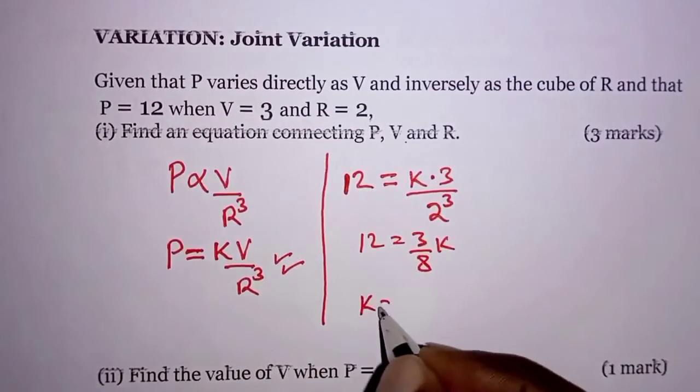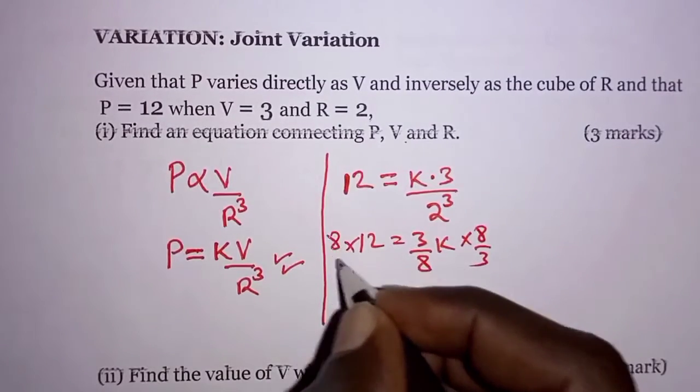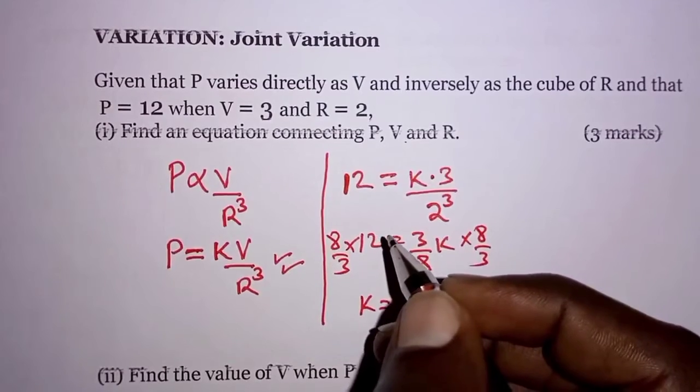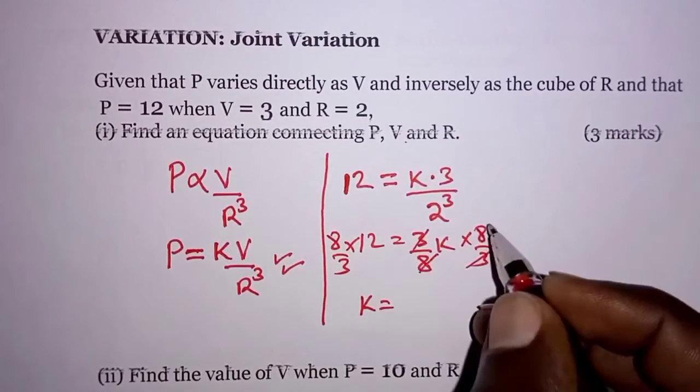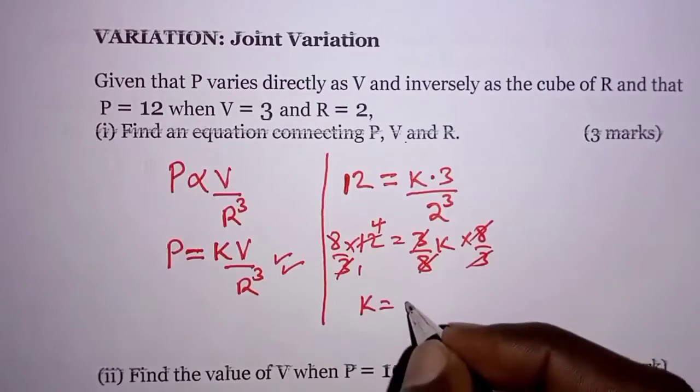That means K is, so multiplying both sides by 8 over 3. This and this cancel, 3 goes here once, here 4, 8 times 4 is 32.